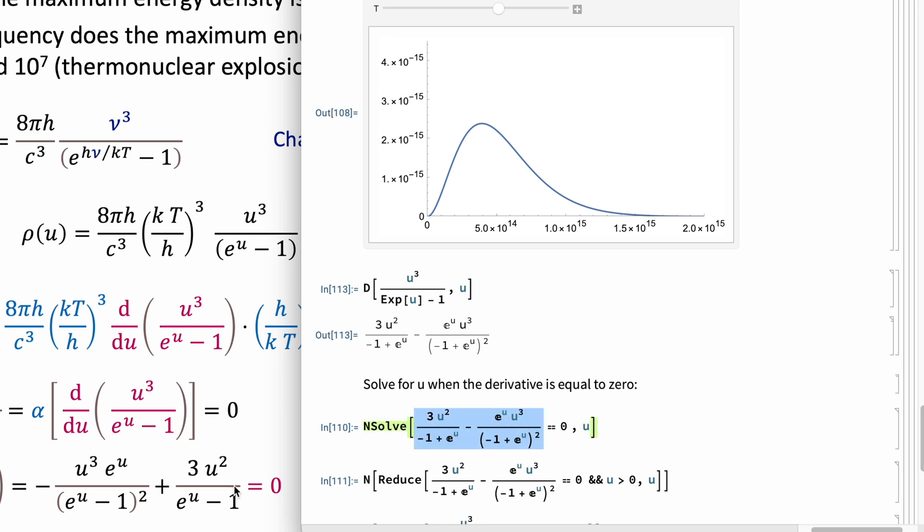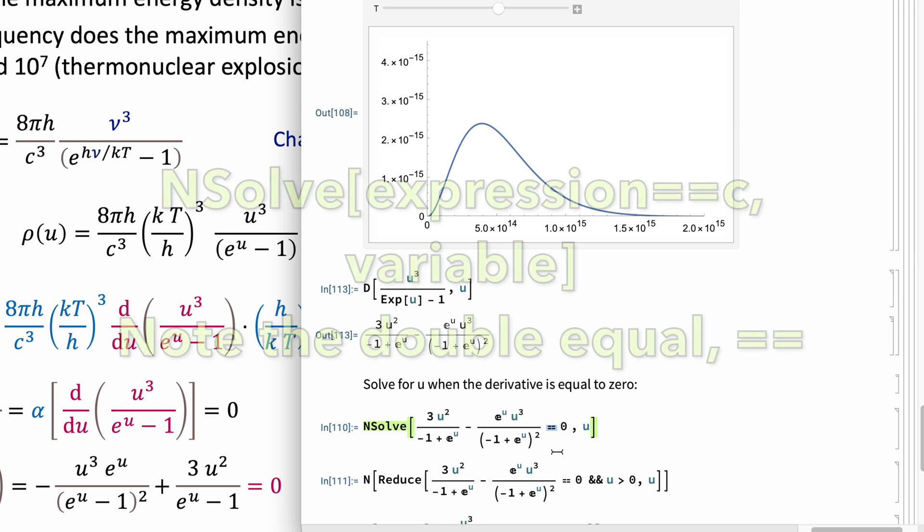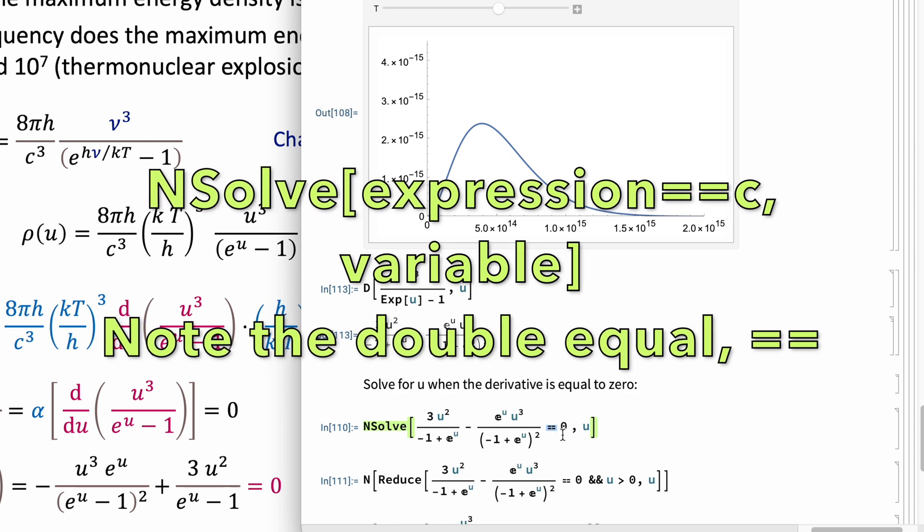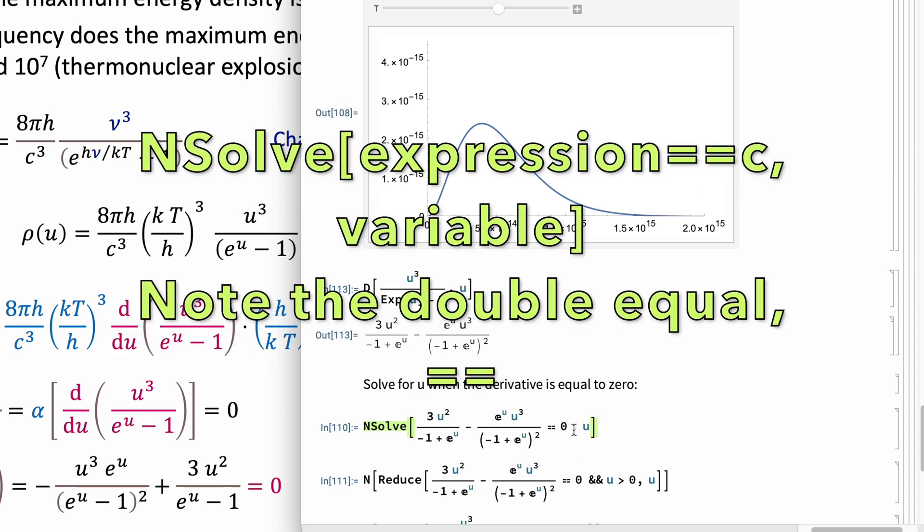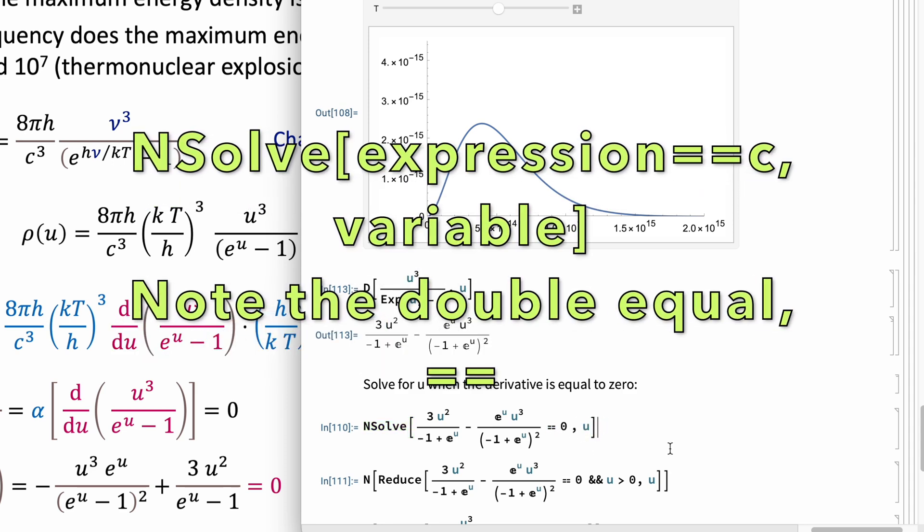Now, the expression is the derivative that I got should be equal to zero, and please note that I have this double equal. It's not expression equals zero, it's expression equals equals zero. That's the syntax that you have to use in Mathematica, then with respect to u, comma u. And then when you do that.